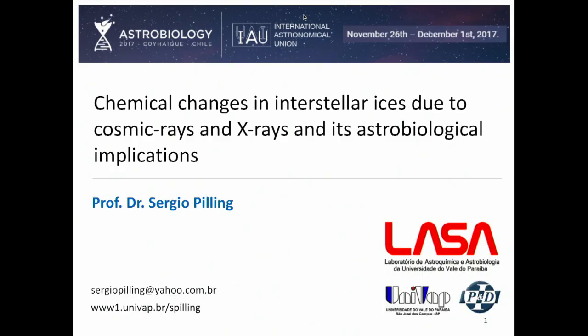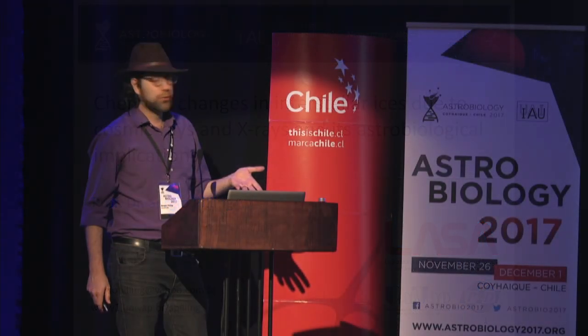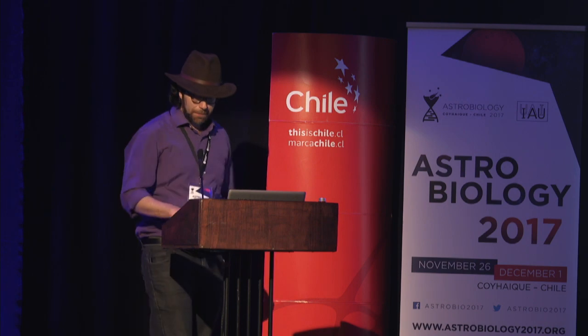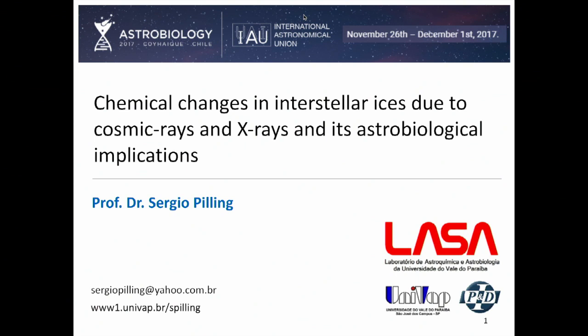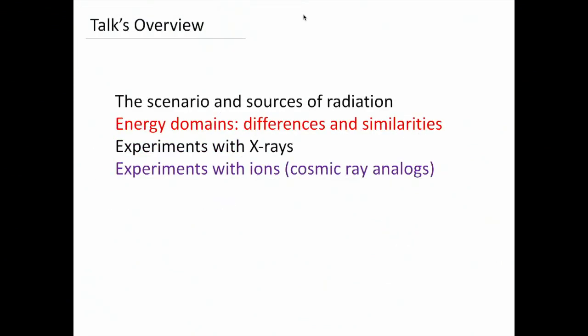Now I will move a little bit the focus of the talk of today. This talk I will present to you some experimental results of astrophysical ice illuminated by ionizing radiation, such as X-rays and cosmic rays, and the implications on this research in astrobiology. The overview is I will talk about the astrophysical scenario and then the similarities and differences between X-rays and cosmic rays, and I will move to X-rays and experiments with ions.